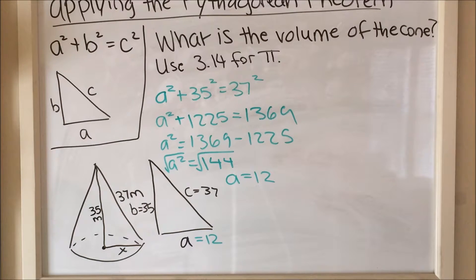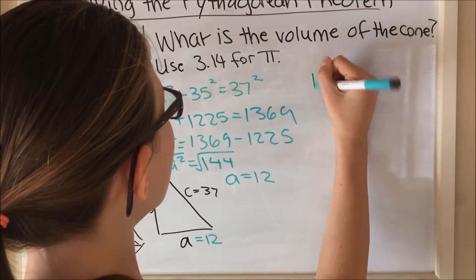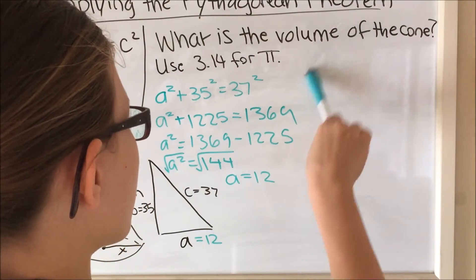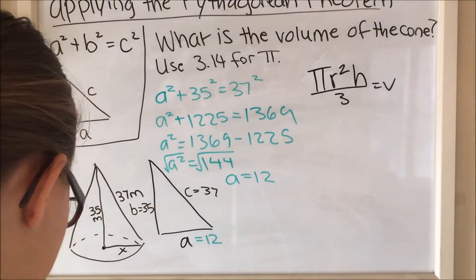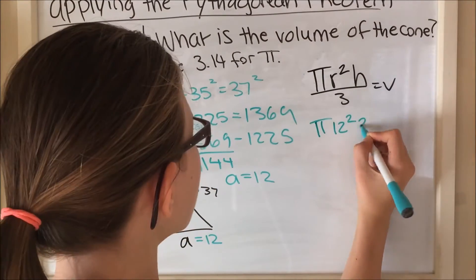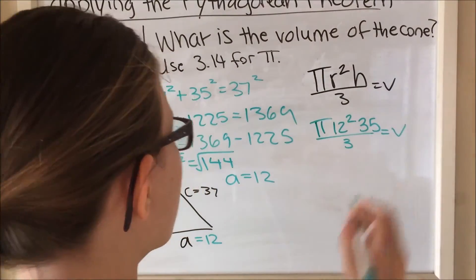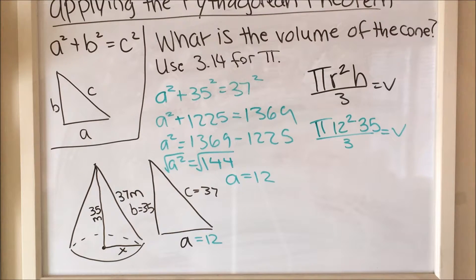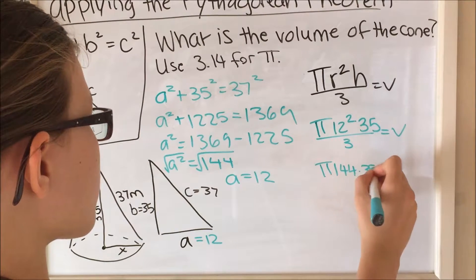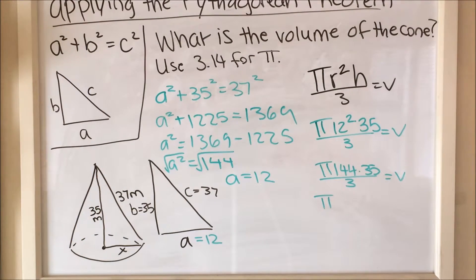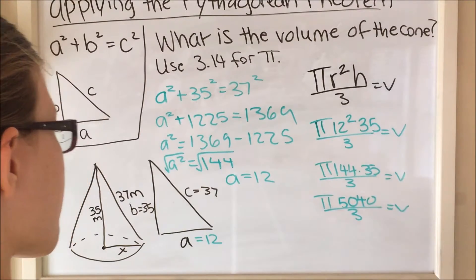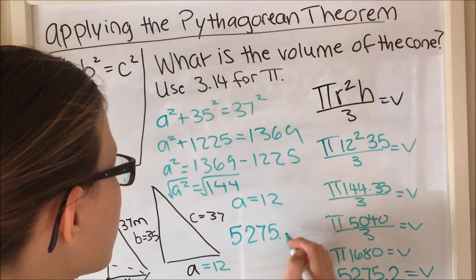Now that we know the radius, we can figure out the volume. We plug in the radius and the height — make sure you use the height, not the slant height. So it's π times 12 squared times 35 divided by 3. The answer is 5,275.2 meters cubed.